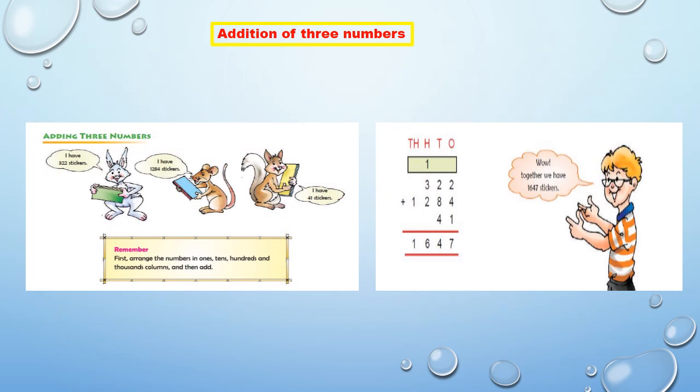Addition of three numbers. First, arrange the numbers in ones, tens, hundreds, thousands columns. And then add. The sum of 322, 1,284 and 41 is equal to 1,647.